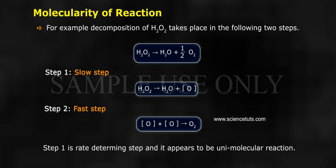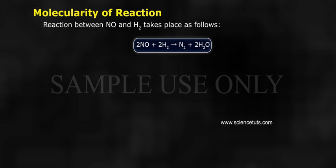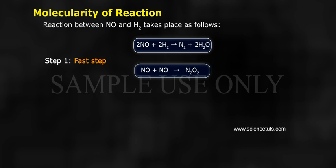Reaction between NO and H2 takes place as follows: 2 moles of nitric oxide plus 2 moles of hydrogen gives nitrogen plus 2 moles of water. 2NO plus 2H2 gives N2 plus 2H2O. Step 1 (fast step): NO plus NO gives N2O2.